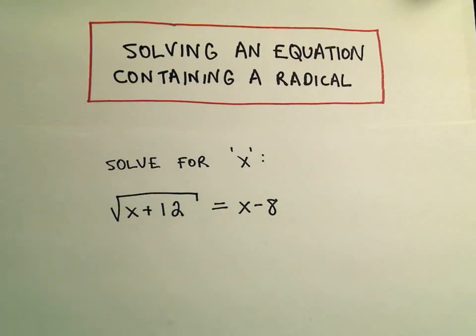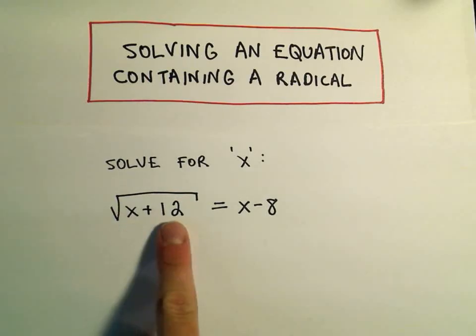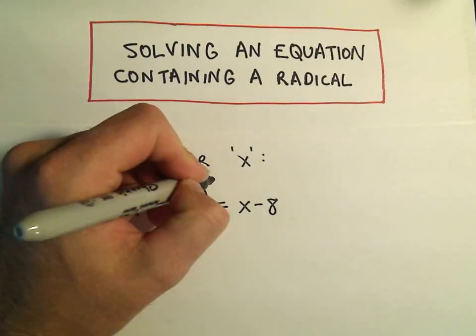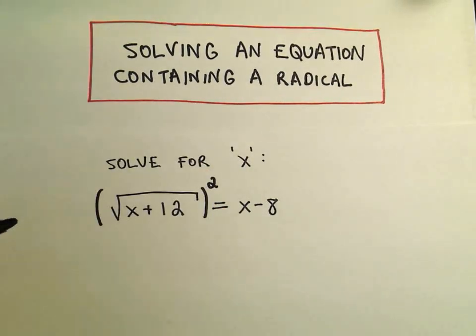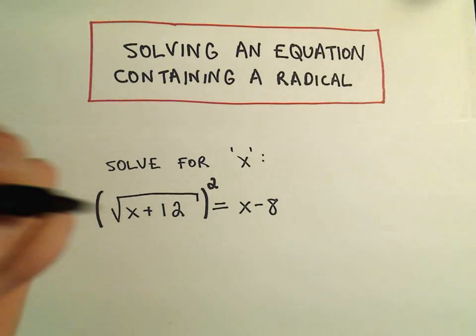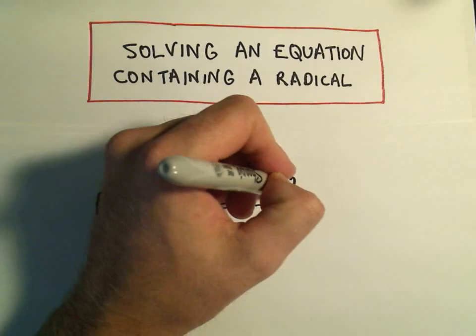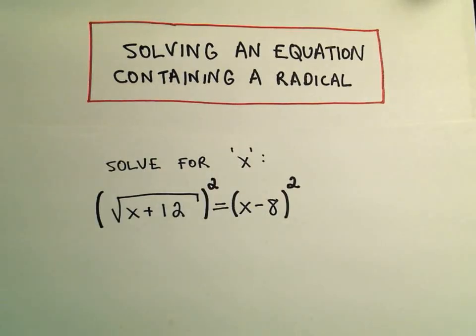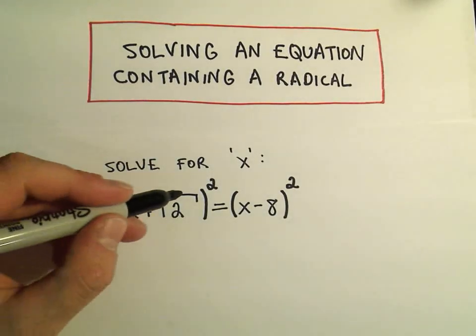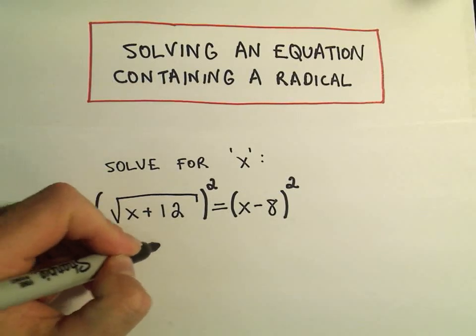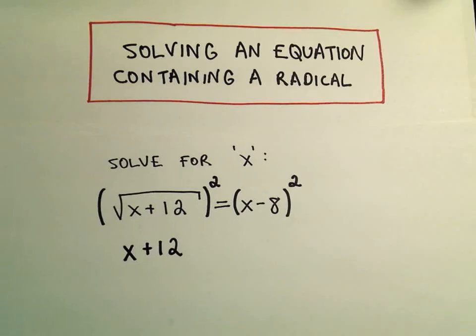So in this case, since we already have the square root isolated, to get rid of the square root on the left I have to square it. That's the operation just to get rid of the square root. Well, since I do it to the left side, I also have to do it to the right side. When you square a square root, you just get whatever's underneath the square root. So we'll just be left simply with the x plus 12.